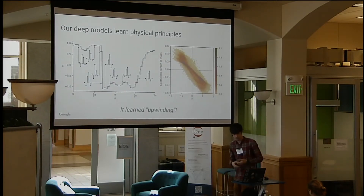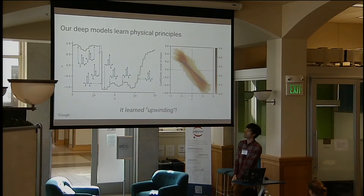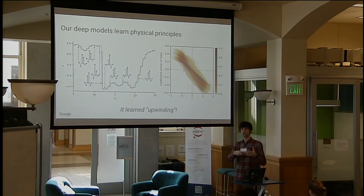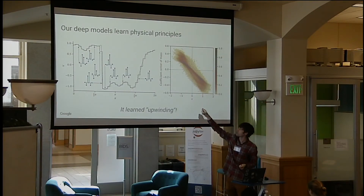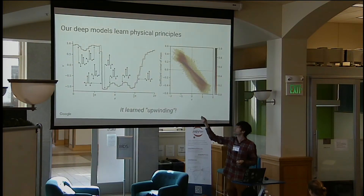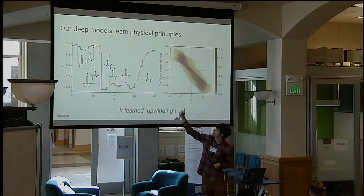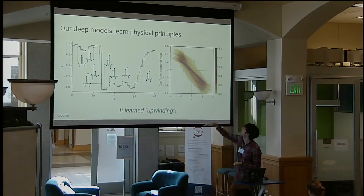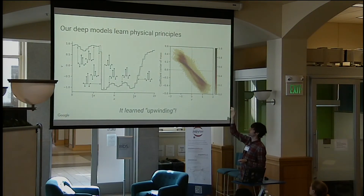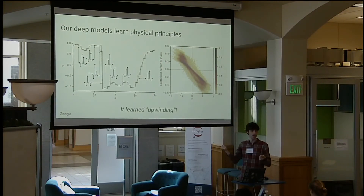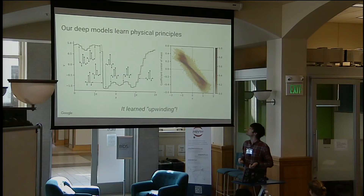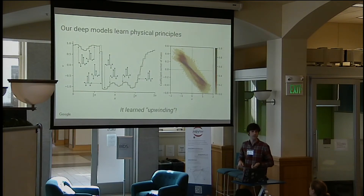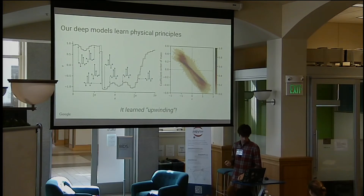Another interesting thing: because we built in the structure of the standard numerical method, we can look at the predictions of the neural net and interpret them. We can look at these learned finite difference coefficients, and you can see the coefficients pointing preferentially in a certain direction, anti-correlated with the velocity field. This anti-correlation basically means the model is learning to look in the upwind direction, which is a very common trick used in numerical methods for solving fluid dynamics. So it rediscovered some physical knowledge.